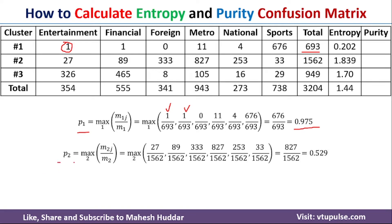Similarly, we calculate P2: max of (M_2J / M_2). There are 27 Entertainment objects in Cluster 2 out of 1562, 89 Financial objects divided by 1562, 333 Foreign objects divided by 1562, and so on for the remaining classes. We get 0.529 as the purity for Cluster 2.